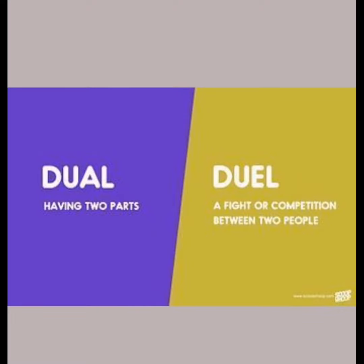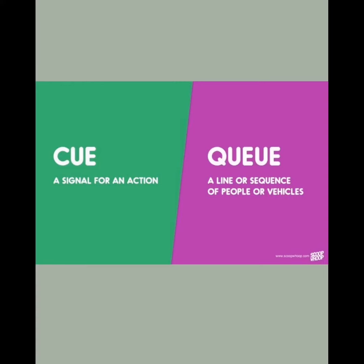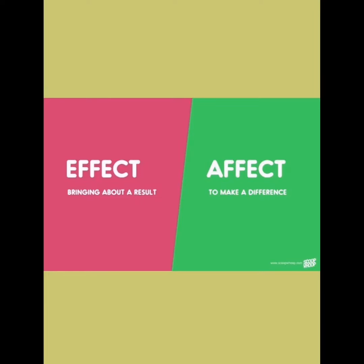Next we have 'cue' vs. 'queue'. 'Cue' (C-U-E) is a signal or indication for someone to do something, while 'queue' (Q-U-E-U-E) is a line or sequence — between people or vehicles — waiting in order.